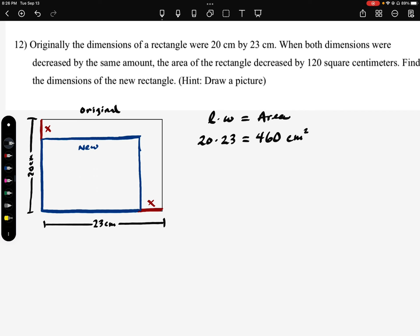Okay, so by taking off these amounts here, these x amounts here, it's going to reduce it. So this is our original. So our new rectangle, we know that we are going to lose from the original the 120. So we'll just take away 120 from this, and that should give us 340 square centimeters.